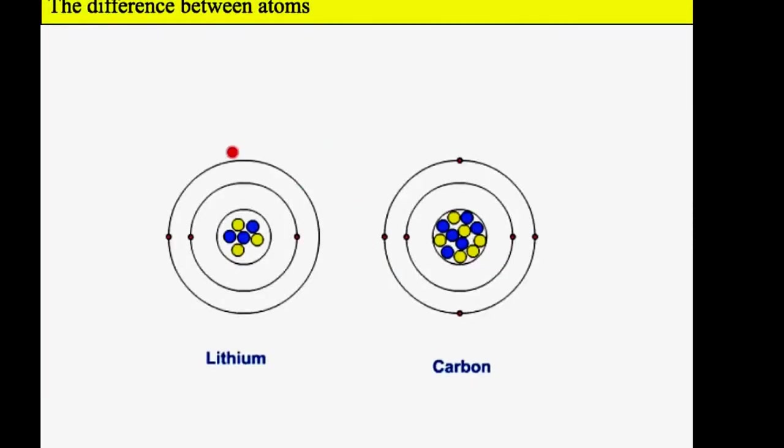Here we've got two atoms of different elements: lithium and carbon. The blue dots represent protons. Lithium has three protons, that's what defines lithium. This one has six protons, therefore it's carbon. If this loses or gains protons, it is no longer carbon. It is the number of protons that defines what the element is.